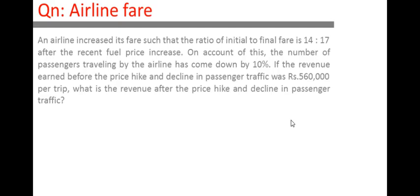I will categorize it into two parts: initial fare and final fare, and make a tabular column. Initial fare is 14, final fare is 17. When the price is 14, the number of passengers is 100 — this is an assumption. After the price increase, passengers decreased by 10%, so now it is 90. For total revenue: price 14 with 100 passengers gives 1400; price hike 17 with 90 passengers gives 1530.